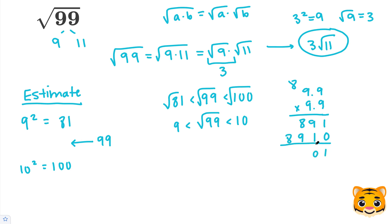When we add these together, we end up getting 98.01, and we can see that this is 0.99 away. This is actually the closest we'll get to 99, so we can say that 9.9 squared is approximately 99. So then we can say 9.9 is approximately the square root of 99.